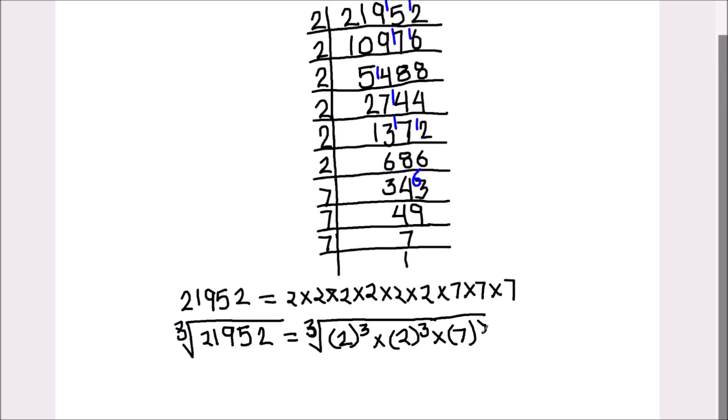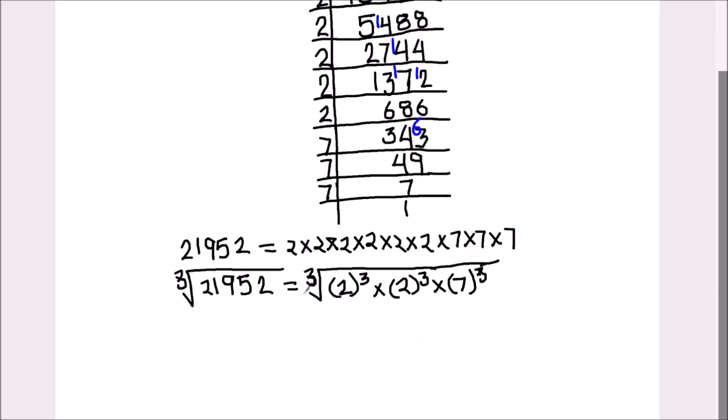We are writing these numbers in exponent form because they are under the cube root sign, and this cube and cube root sign get cancelled and these numbers will come out of the cube root sign. Cancel out the cubes and cube root.